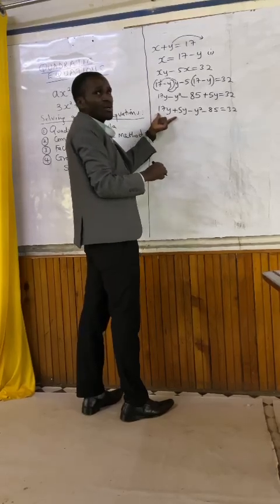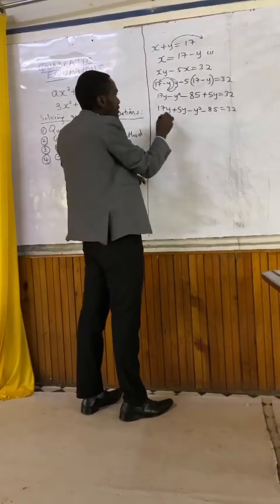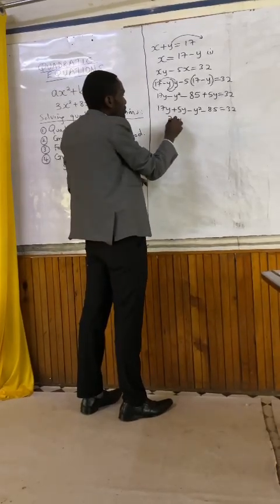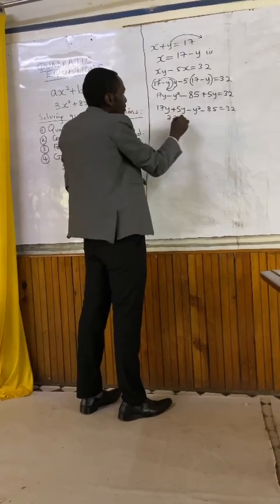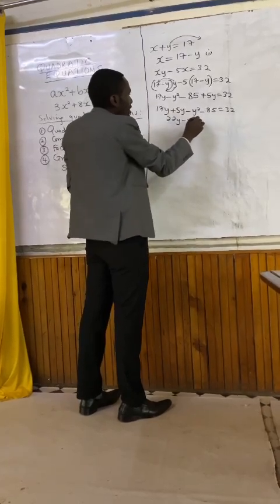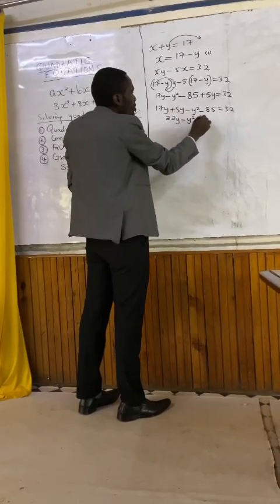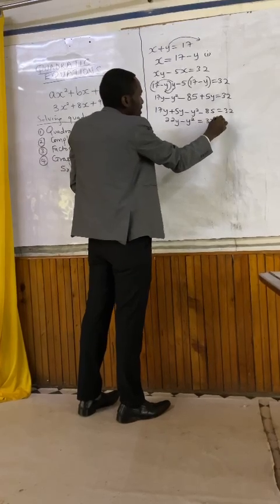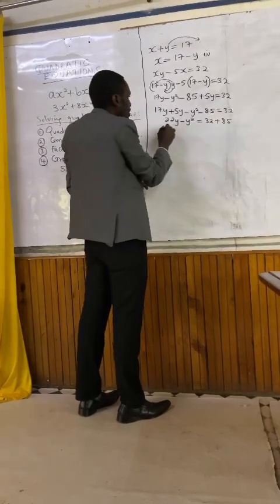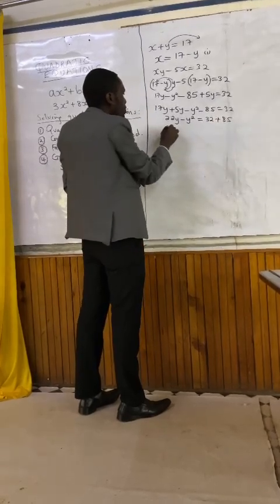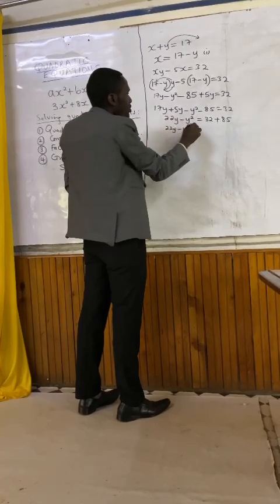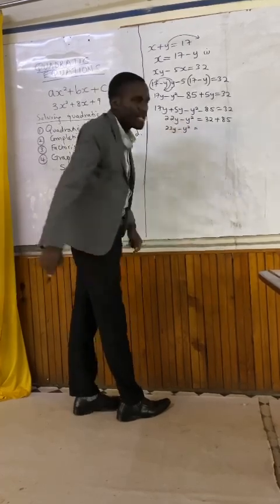17y plus 5y is 22y. 22y minus y squared is equal to 32 plus 85.